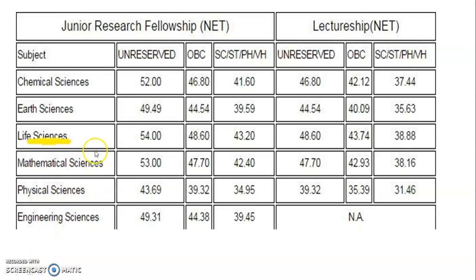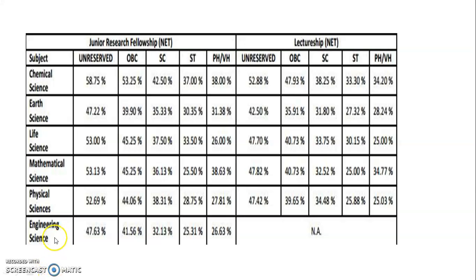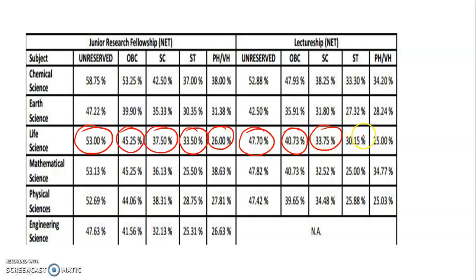Looking at additional previous year life science data: one year shows JRF unreserved at 54%, LS at 48.6%, OBC LS at 43.74%, and SC at 43.20%. Another year shows JRF unreserved at 53%, LS at 47.70%, SC 37.50%, OBC 45.25%, ST 30.50%, PWD 26%, and for LS: OBC 40.73%, SC 30.75%, ST 30.15%, PWD 25%.